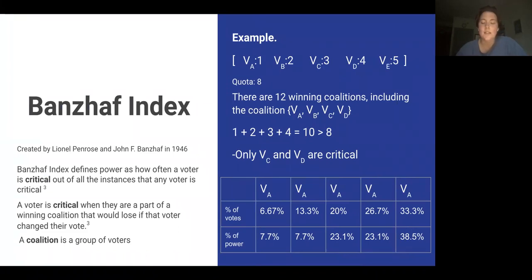There are two main indices we used to model how much power voters had. You have to kind of pick what you want to quantify because power is not a black and white thing. The first index we worked with is called the Banzhaf Index, created by Lionel Penrose and John Banzhaf. That measures power as how often a voter is critical, which is how often when they are part of a winning coalition, if that voter left, the group would become non-winning. So that voter is critical to the success of the coalition.